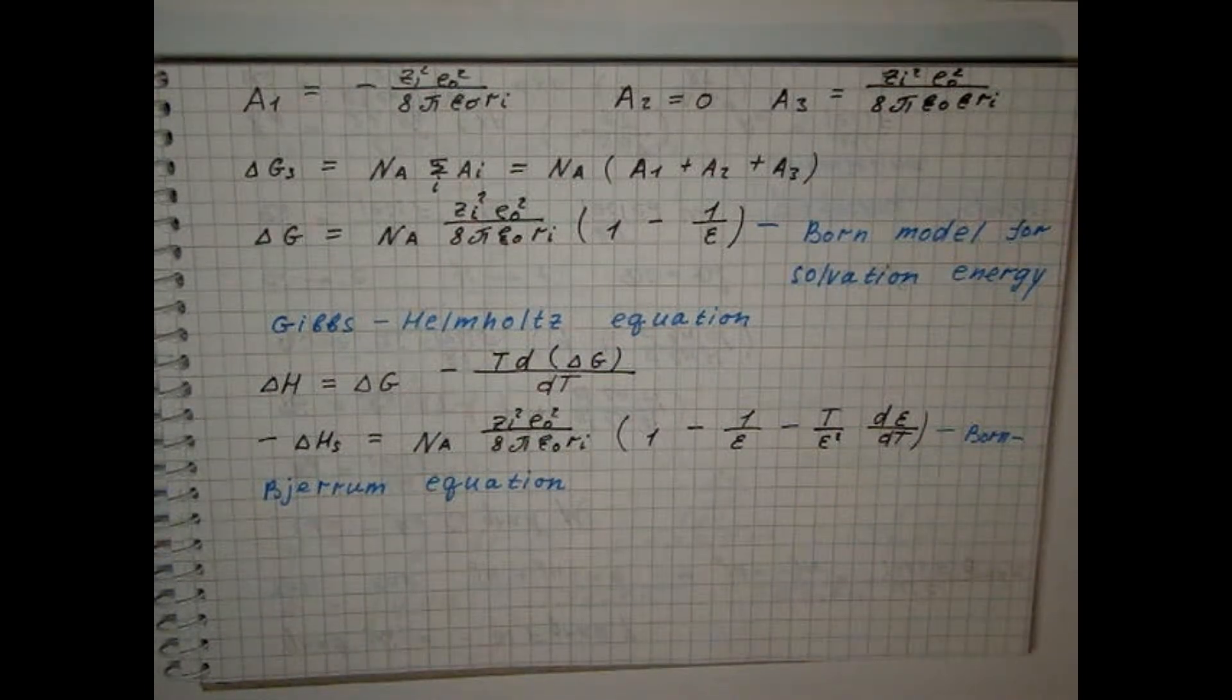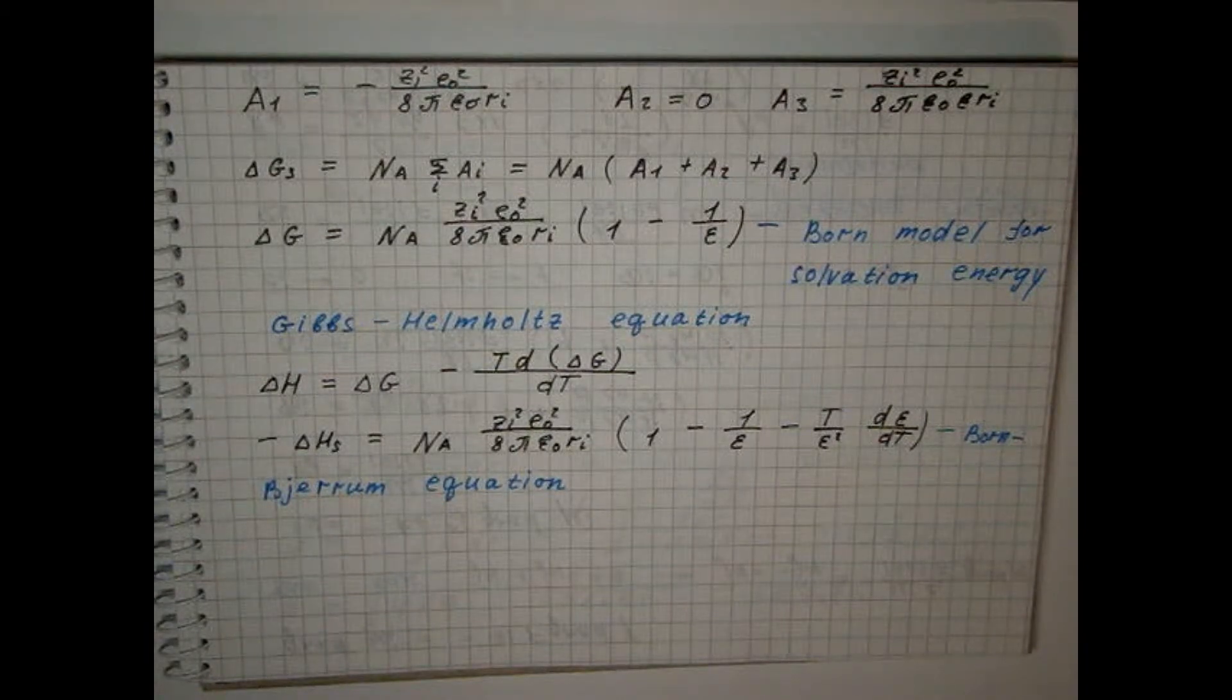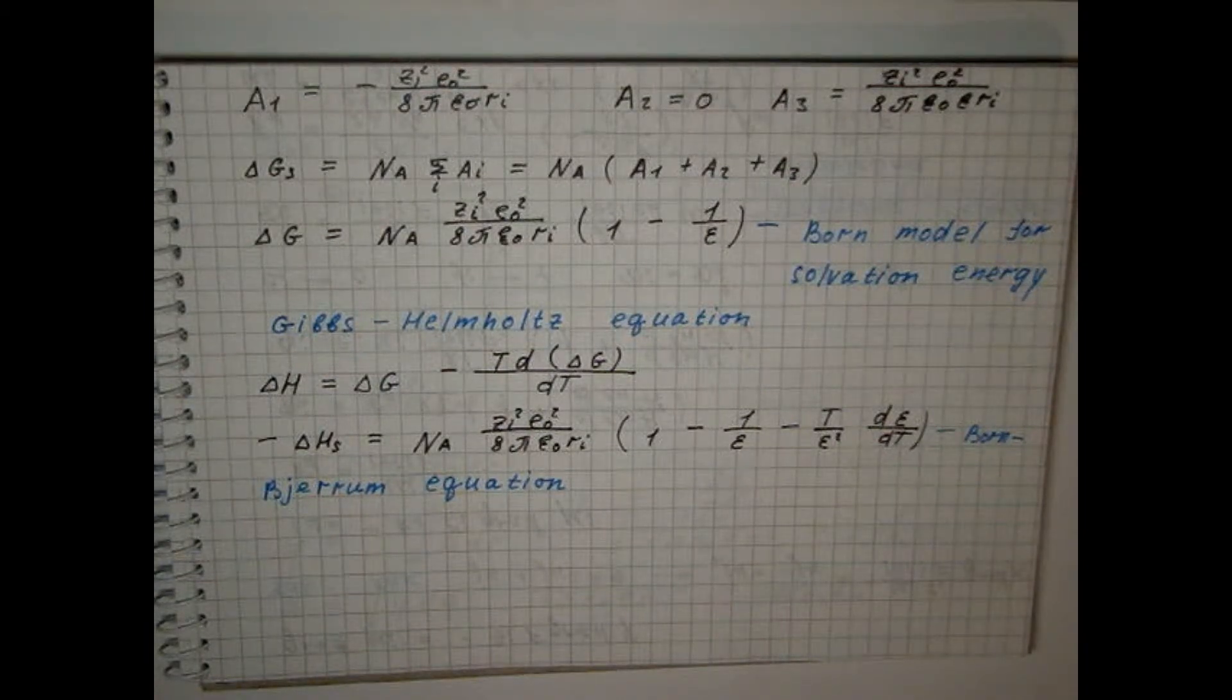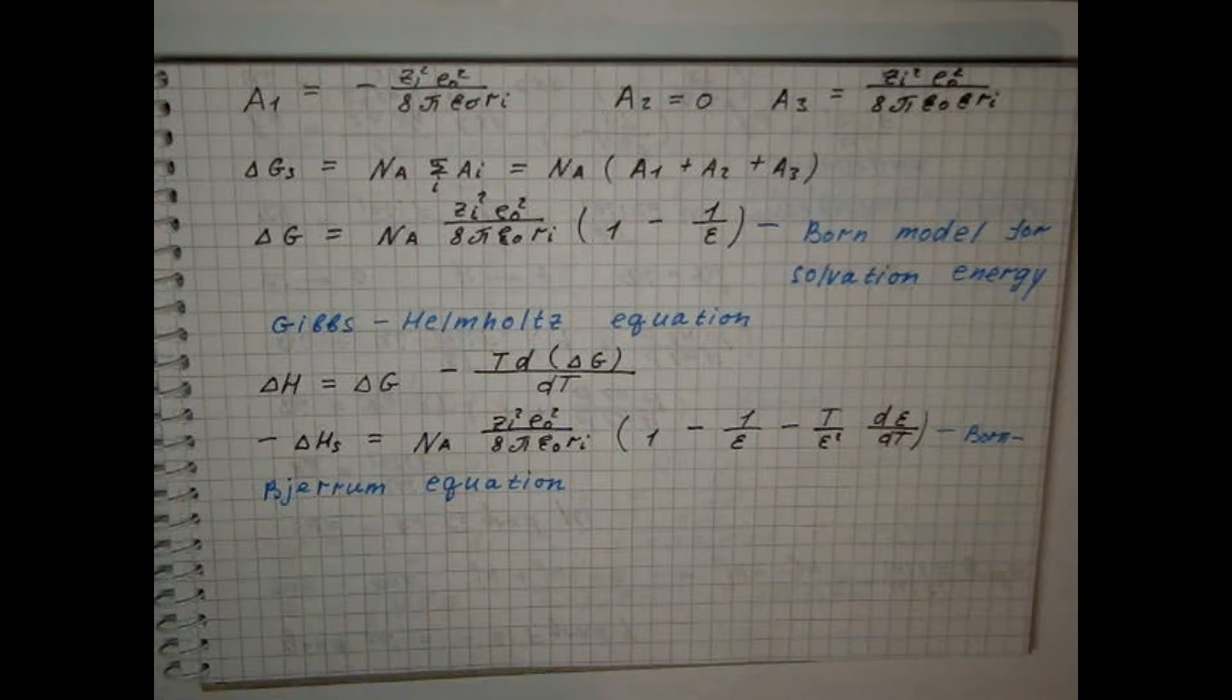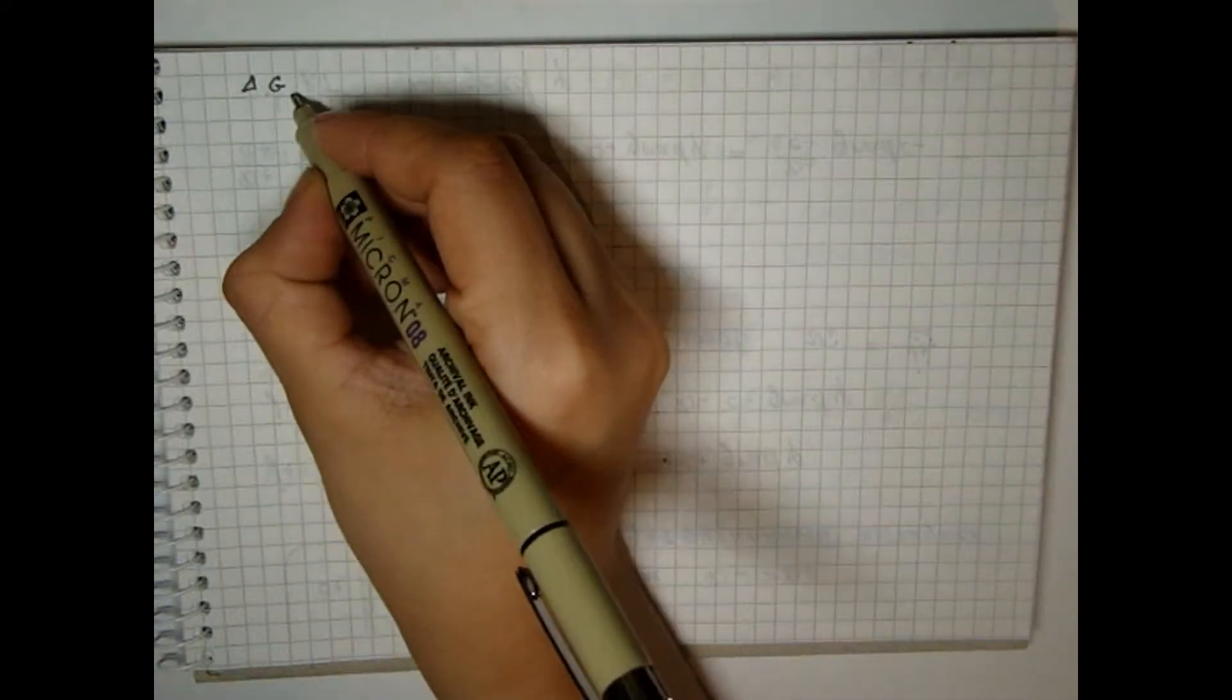The hydration energies calculated by the Born model are very significant and sufficient for the destruction of the crystal lattice during the formation of electrolyte solutions. This is the most important qualitative conclusion from the Born theory, which shows that the main reason for the formation and stability of electrolyte solution is ion solvation. Let's compare two formulas.